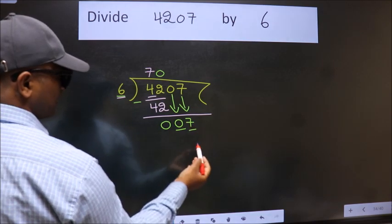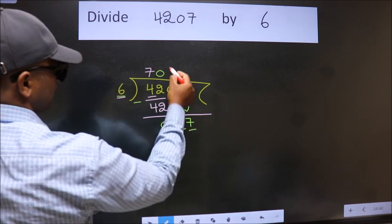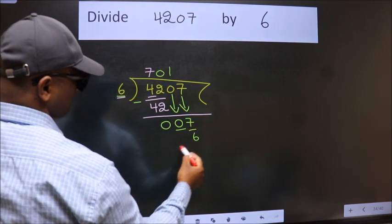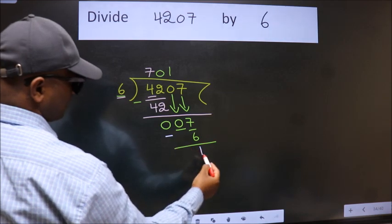So, 7. A number close to 7 in 6 table is 6 1s 6. Now, we subtract. We get 1.